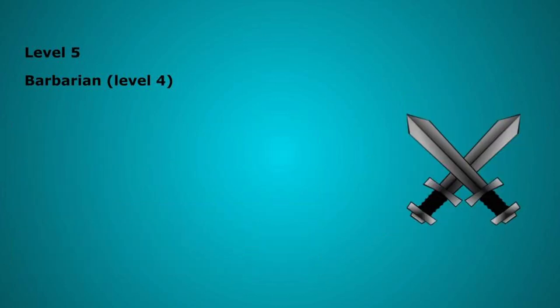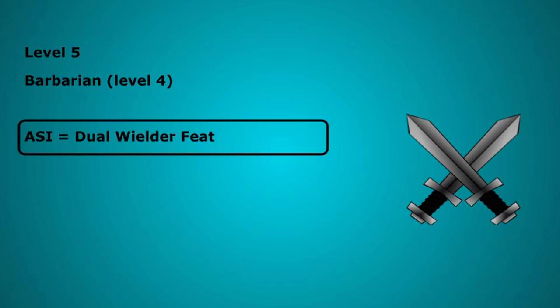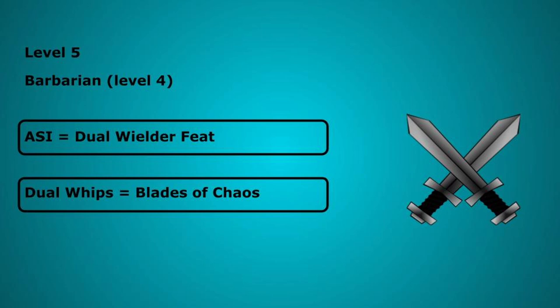Level 5 we take Barbarian to level 4 getting an ability score increase. We will take the dual wielder feat which enables us to dual wield weapons that aren't heavy but also lack the light property. Although the damage die reduces we will start dual wielding whips. Our level 5 Kratos now has Blades of Chaos that can deal 2d4 plus 6 strength plus 4 rage in weapon damage and 1d6 plus 2 in radiant damage in a whole turn across 2 weapon attacks. This averages at 20.5 damage per turn while raging.